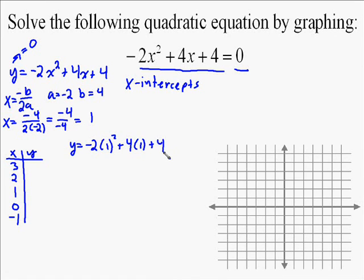So now we have to figure out what are the values of y at those points. I'm going to put 1 in first just to find the vertex, which is usually a good place to start. So it's going to be negative 2 times 1 squared, which is negative 2, plus 4 times 1, which is 4, plus 4. So that will give you 8 plus negative 2, which is 6.